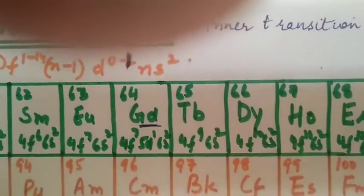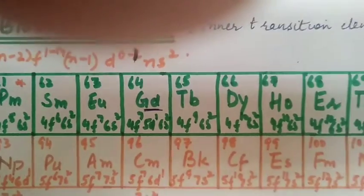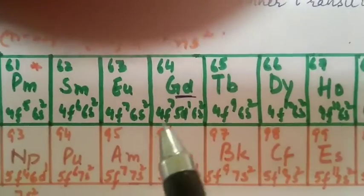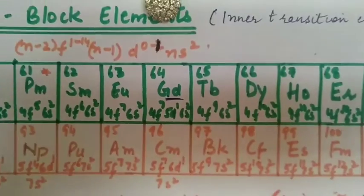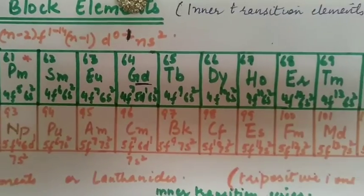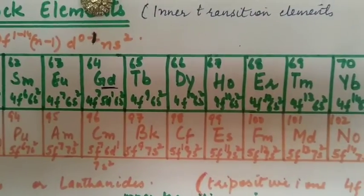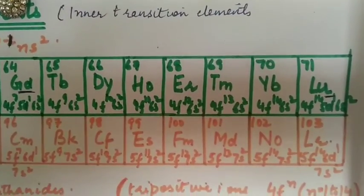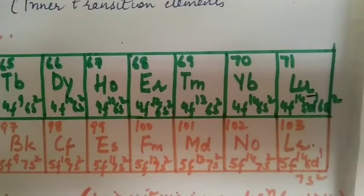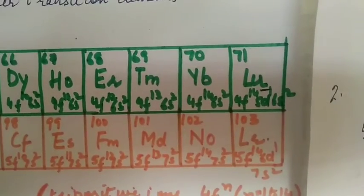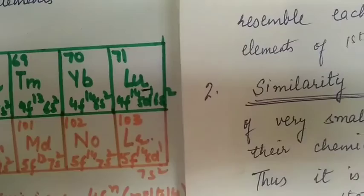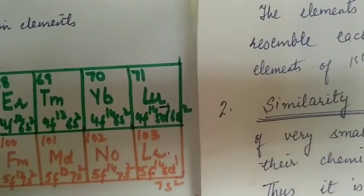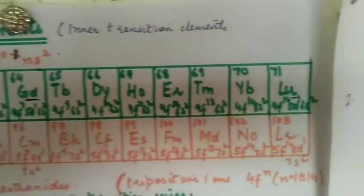Now gadolinium - because 4f^7 is exactly half-filled, the next electron enters 5d so that it can enjoy the stability of the half-filled configuration. Then terbium 4f^9, dysprosium 4f^10, holmium 4f^11, erbium 4f^12, thulium 4f^13, ytterbium 4f^14, and lutetium 4f^14 5d^1 6s^2. This is about electronic configuration.